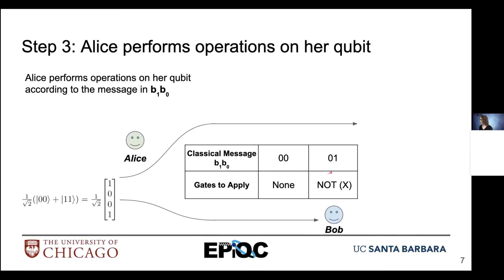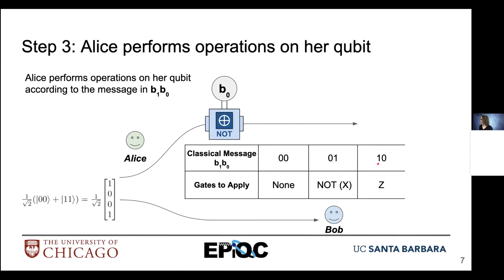If the message she wishes to transmit is 01, she applies a NOT gate or X gate to the qubit in her possession — this is a NOT gate that is classically controlled, indicated by the double lines showing classical information. If we have the bit stream 10 to transmit, we need to apply a Z operation. So if B1 equals 1 and B0 equals 0, the qubit passes unchanged through the NOT and we apply a Z operation.